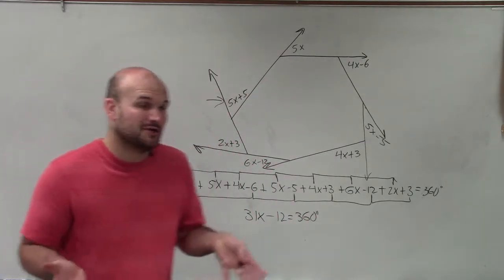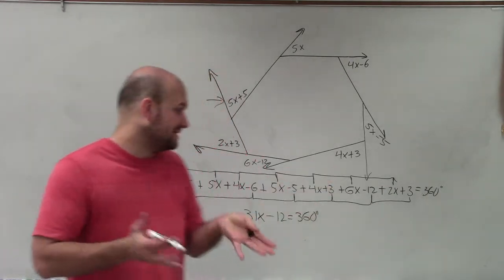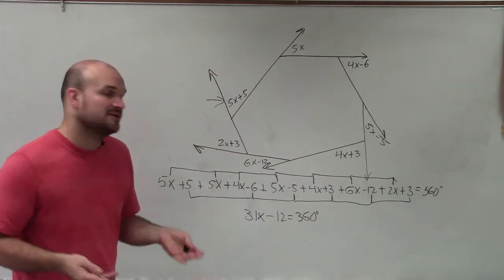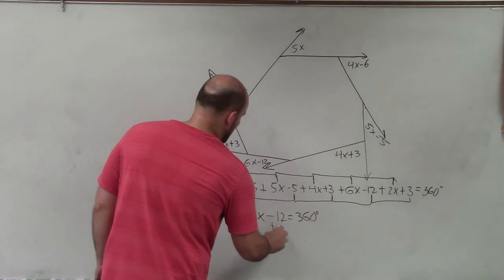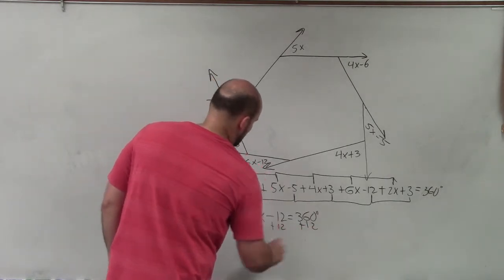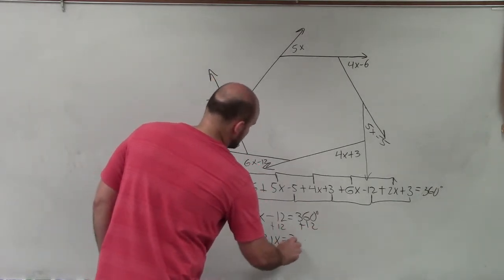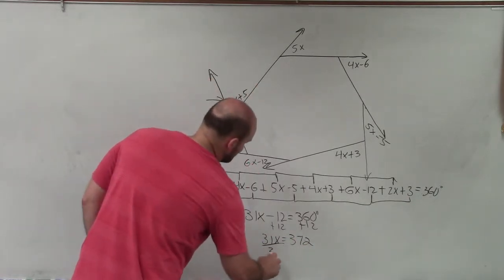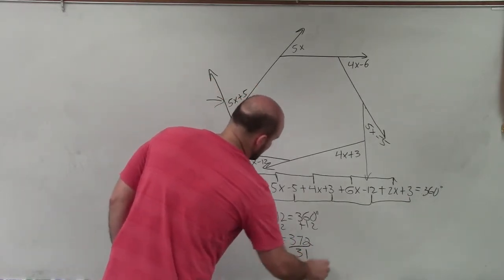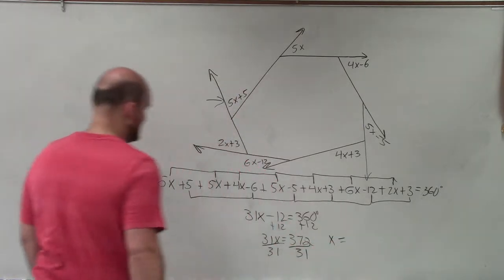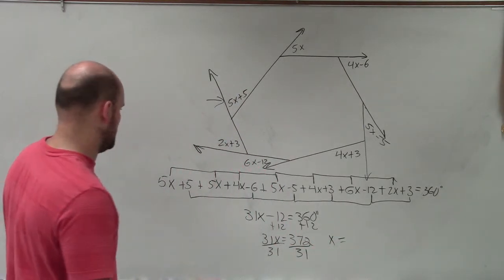So even though it's a very long equation, I was able to quickly break that down into a two-step equation. Now I can go and solve. So I add 12 on both sides and I have 31x equals 372. Now just divide by 31, and x equals 12.